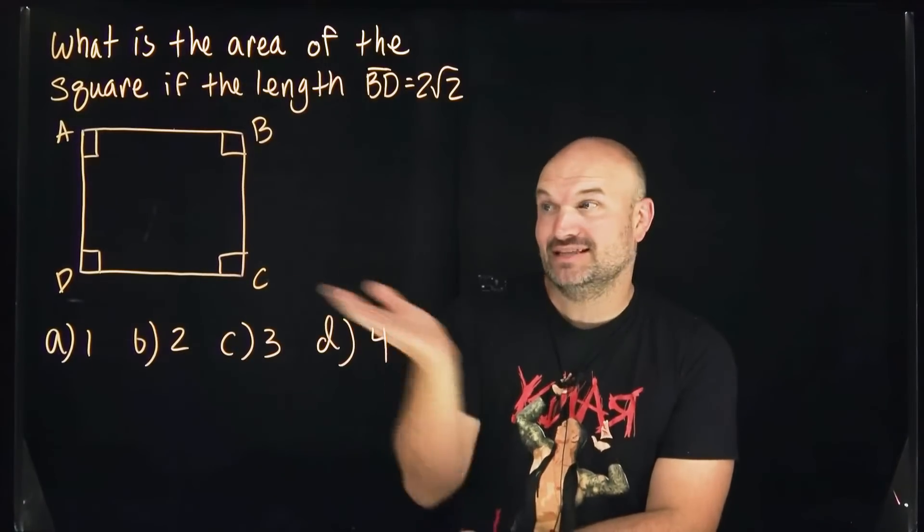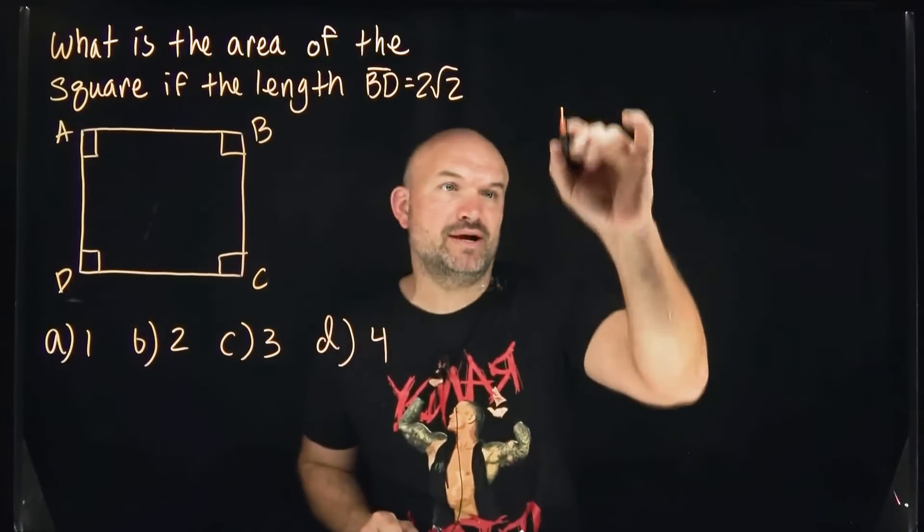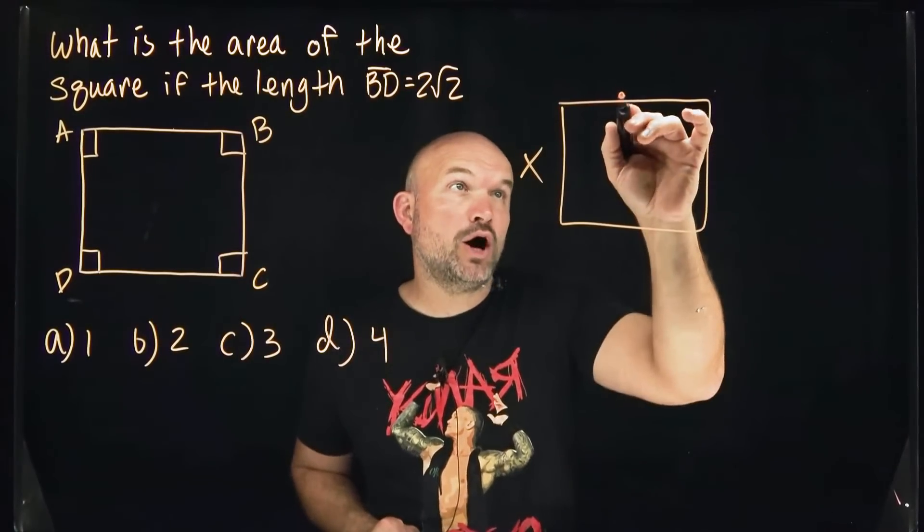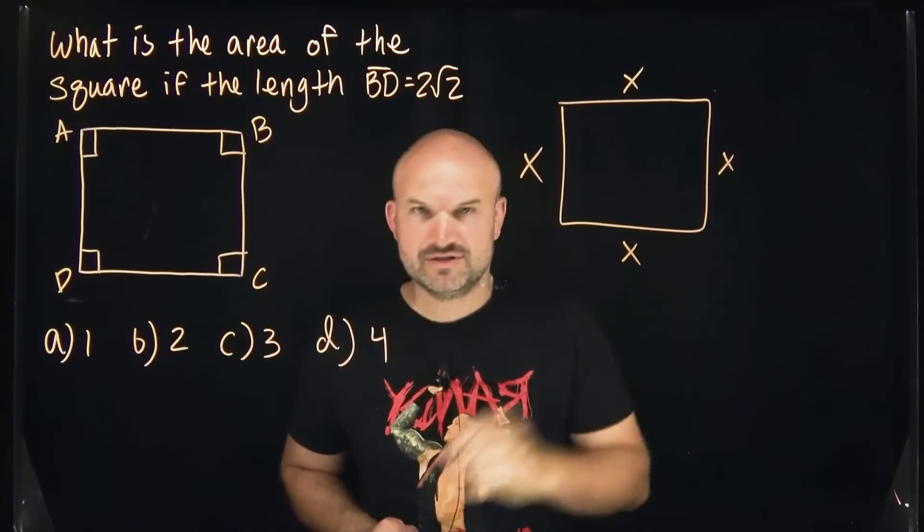Well, the first thing, we need to find out the lengths of the square. Because if we had a square of anything and we know that the one length is just going to be x, we know all the other lengths are also going to be x.